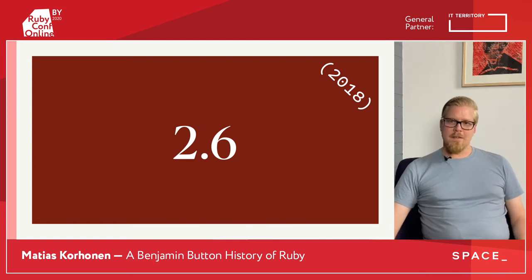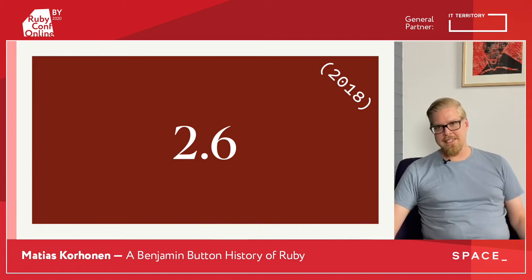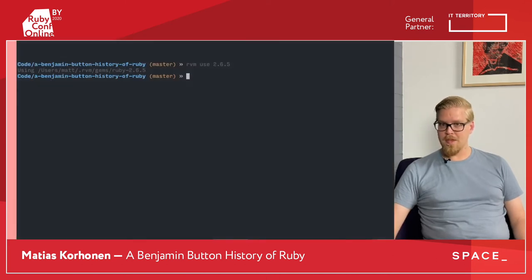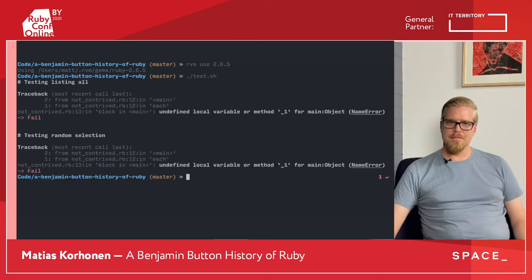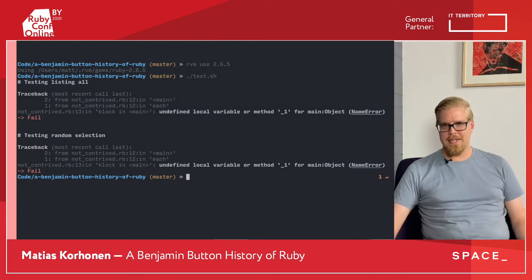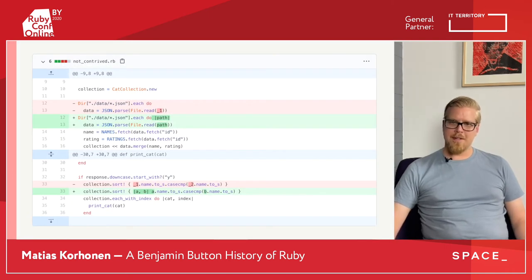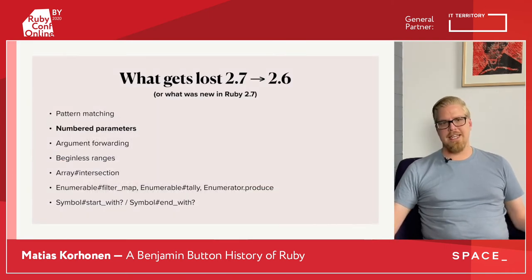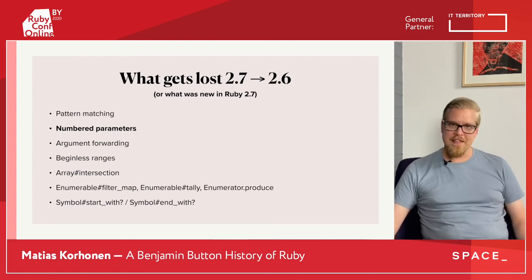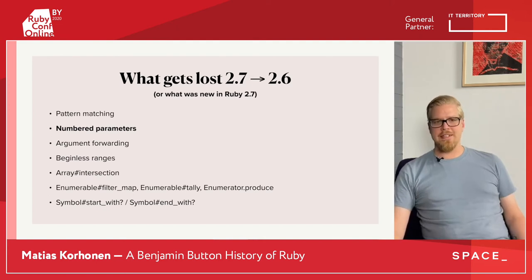Moving on to a slightly older version of Ruby — 2.6 from the distant past of 2018, back when we still had real conferences. If we run our test harness with Ruby 2.6, we see that it fails because we're using numbered parameters, and that explodes. Once we refactor those out, the script runs just fine again. That was really the only feature of version 2.7 we were using in our script.